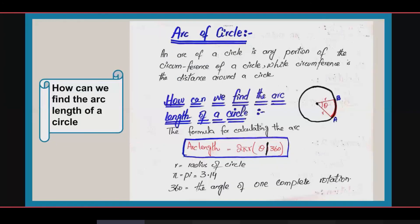Next comes the arc of a circle. An arc of a circle is any portion of the circumference of a circle, while the circumference is the distance around a circle. If we take a portion of a circle, we call it an arc. The formula for calculating the arc length of a circle is: arc length = 2πr × θ / 360, where 2πr is the circumference, r is the radius, π = 3.14, 360 is the angle of one complete rotation, and θ is the angle subtended by the arc at the center.